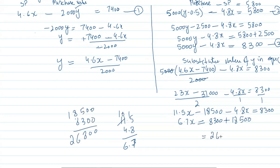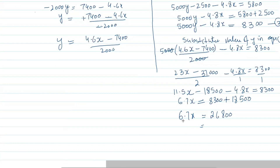We have 6.7x = 26800. Dividing both sides by 6.7: x = 26800 / 6.7 = 4000. So the number of shares of Company A that Joyce's mother has is 4000 shares.